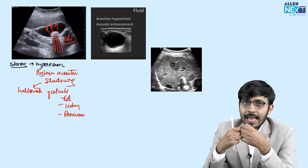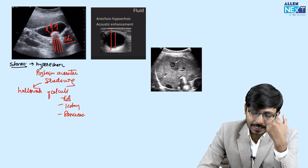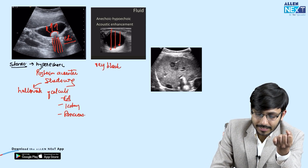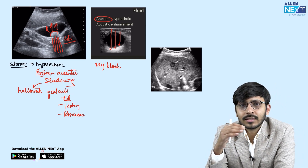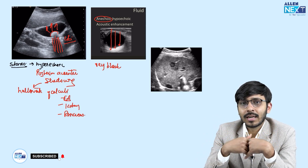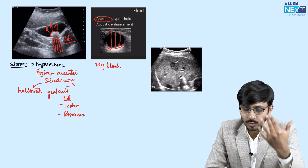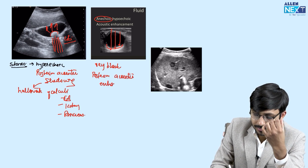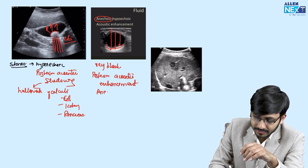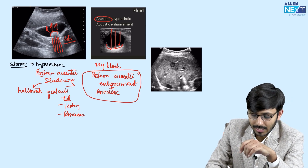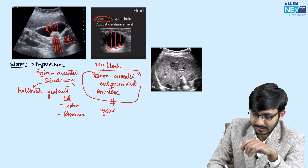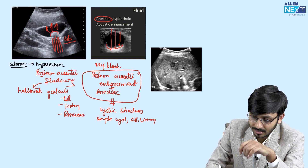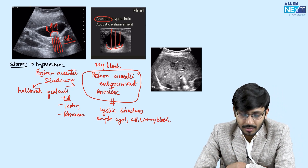Another type are anechoic structures. If they allow sound waves to pass completely through them, the sound waves are not reflected at all, and these structures appear very black. Since they allow all sound waves to pass through, the posterior wall of the cyst reflects some sound waves and appears bright — this is known as posterior acoustic enhancement. Anechoic structures with posterior acoustic enhancement are typical of cystic structures, for example a simple cyst of the liver, gallbladder, or urinary bladder.